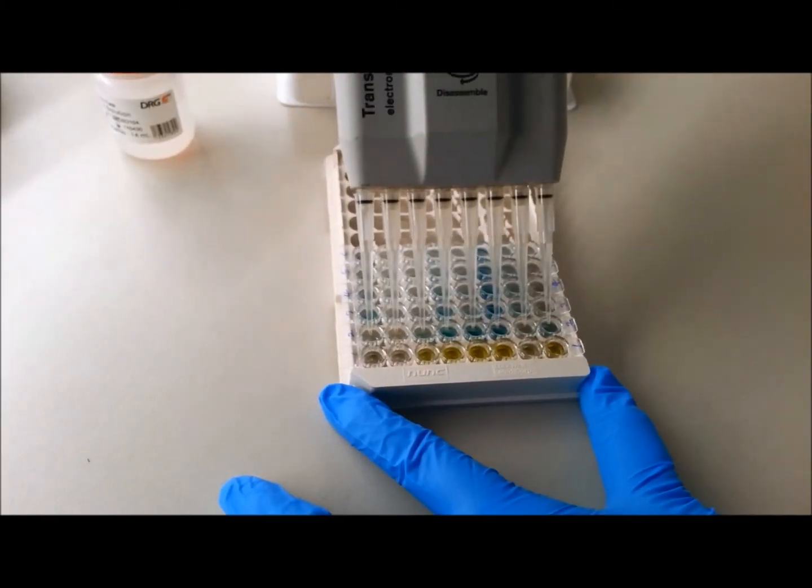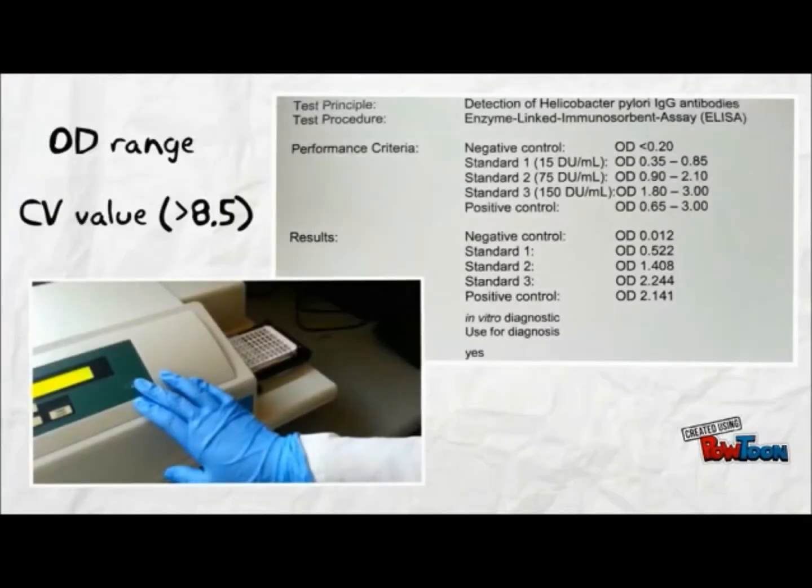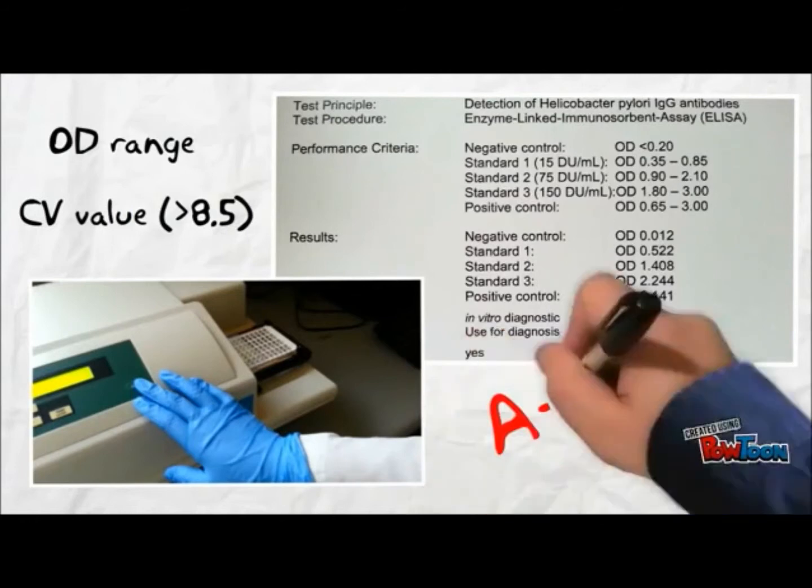Add the stop solution to each well. You will see the blue color turning yellow. Immediately read the plate. If your controls and standards are in the right range and your samples have CV values less than 8.5, you've aced it.